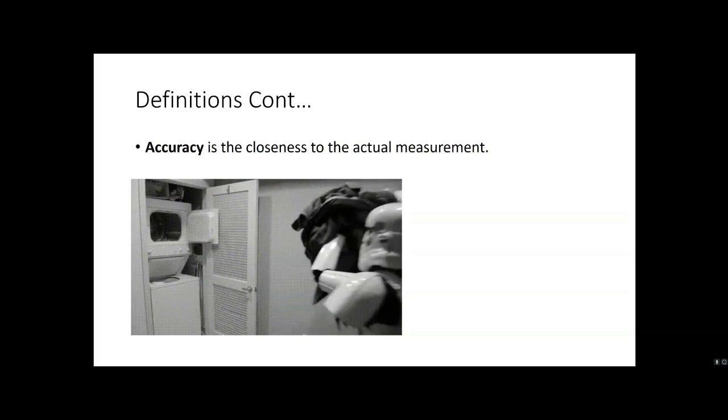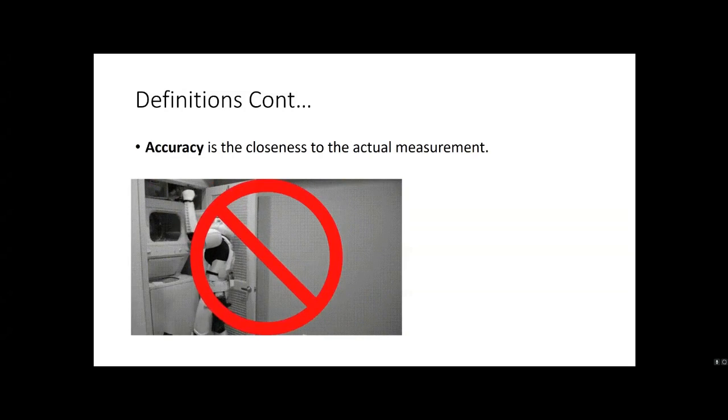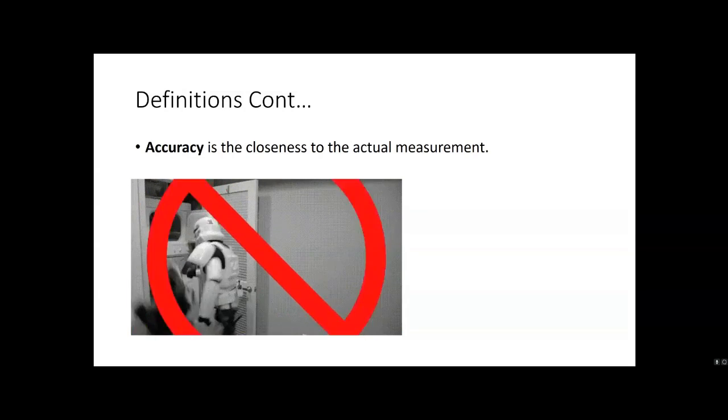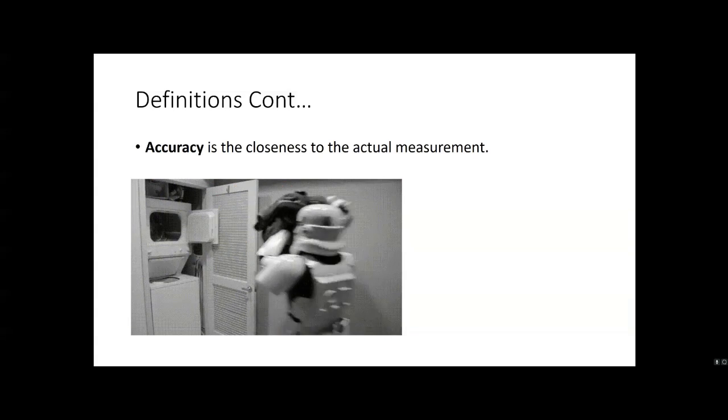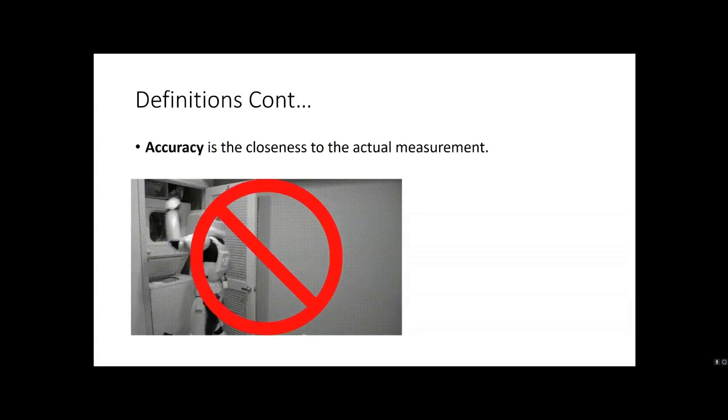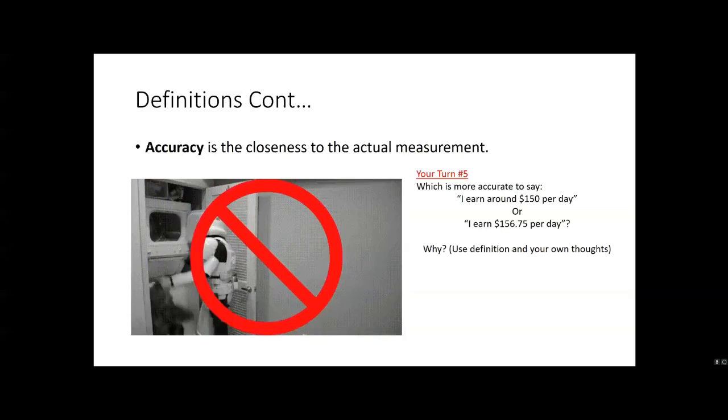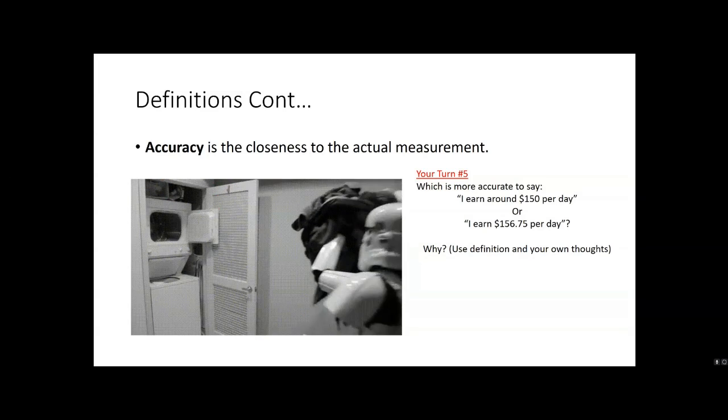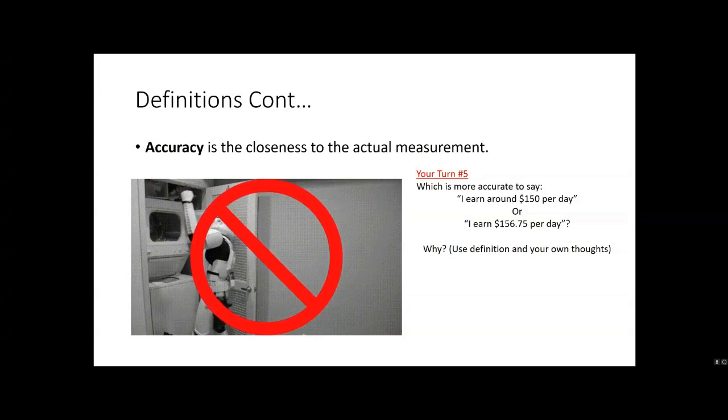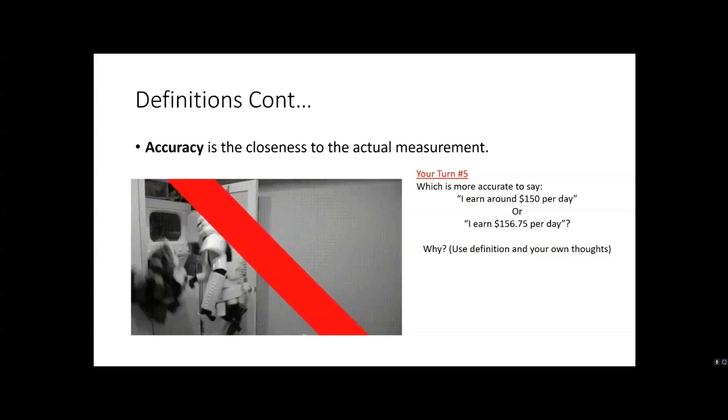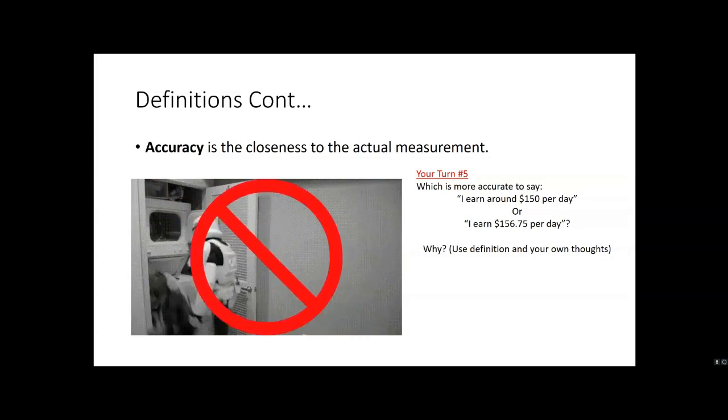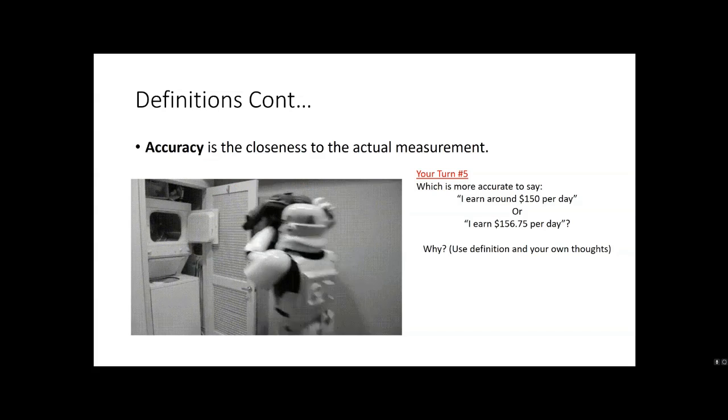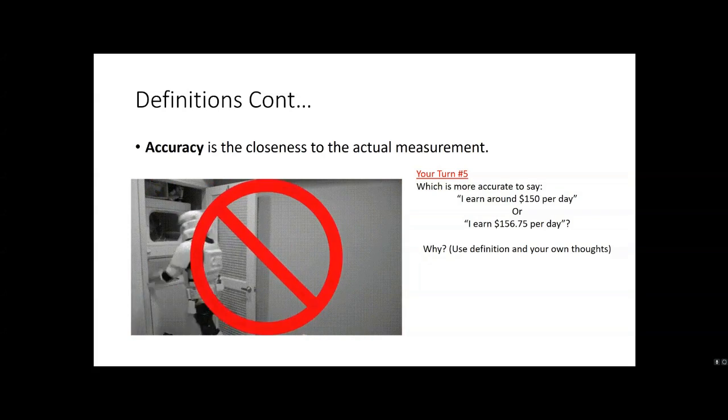Last definition, accuracy. It's the closeness to the actual measurement. And if you don't understand the gif, yeah, do some research. That's a storm trooper, Star Wars. Your Turn #5, which is more accurate to say I earn around $150 per day, or I earn $156.75 per day. Why? Use the definition and your own thoughts. So once you're done with Your Turn, just let me know and we'll get going. Thank you. Bye.